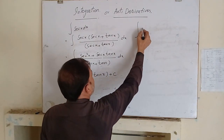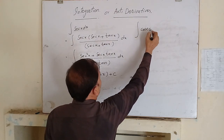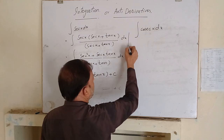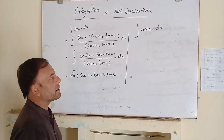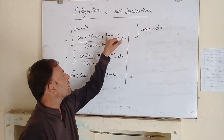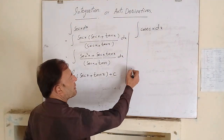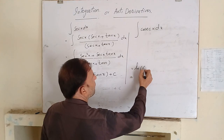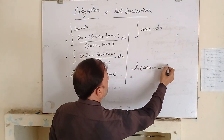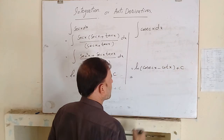It is your assignment to integrate cosecant x. It will be integrated by multiplying and dividing by (cosecant x minus cot x). Its answer will be log of (cosecant x minus cot x) plus c.